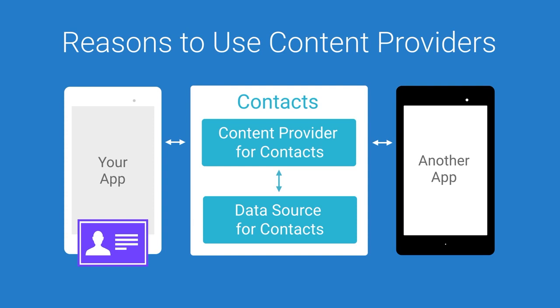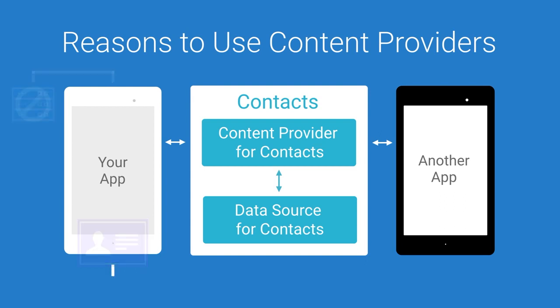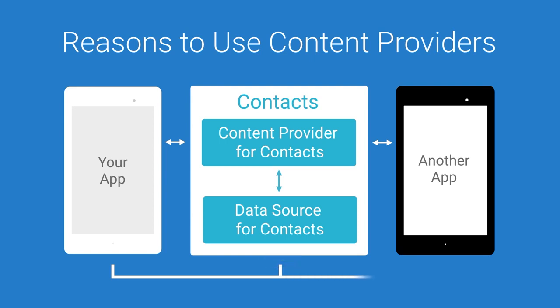So let's see how this helps in the business card example. Here we have our card. Now, if we weren't using the contacts content provider, we might store our data in a separate database. This is no good because your phone's default contact app can't access the data over here. So instead, what we do is use the contacts content provider and give the business card info to that content provider, which then updates the data source for contacts and saves it in the database. Then when the default contact app loads up the contact information, it'll get the information from your business card.